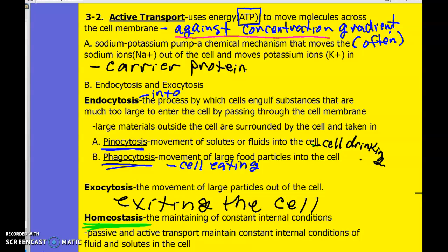So active transport uses some ATP to move molecules across that cell membrane, oftentimes against the concentration gradient. Not always, but oftentimes. So remember nature likes to go, if I have food coloring in water, the food coloring is in one collective glob in the beginning, but it diffuses through the water until it's evenly distributed.